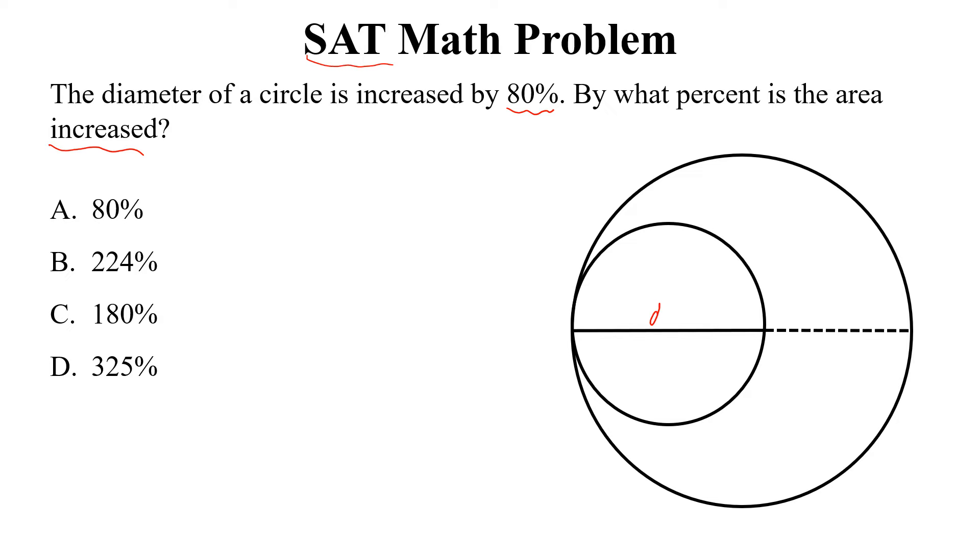Let the diameter of the original circle be d. If it is increased by 80%, then this will be equal to 1.8d.